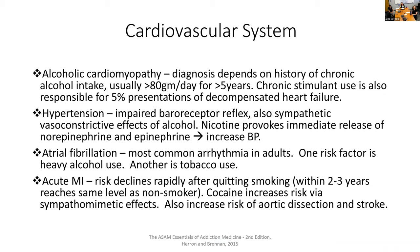In the cardiovascular system, we see alcoholic cardiomyopathy, the diagnosis of which depends on the history of chronic heavy intake of over 80 grams per day for over five years. Chronic stimulant use is also responsible for 5% of decompensated heart failure. Hypertension is related to substance use — alcohol and nicotine provide immediate release of norepinephrine and epinephrine, which can increase blood pressure. Atrial fibrillation is the most common arrhythmia in adults and does put people at increased risk of stroke; risk factors include heavy alcohol use and tobacco. For acute MI, the risk declines when people quit smoking, and cocaine use also increases the risk of MI, aortic dissection, and stroke.